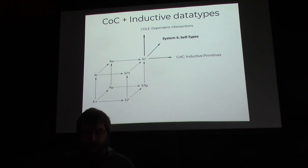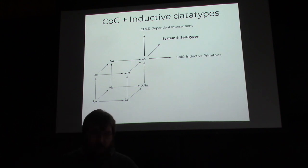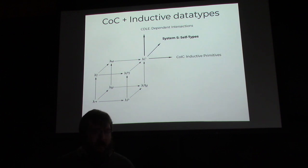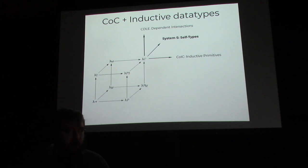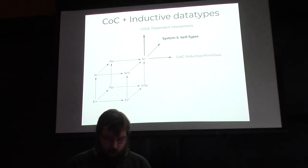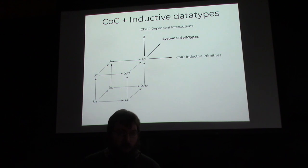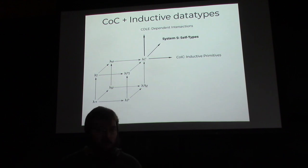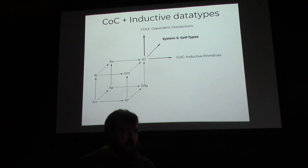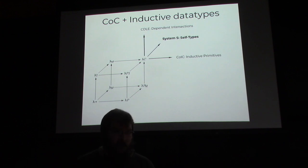The other two options we've looked at are CDLE and System S, both developed by one of our advisors Aaron Stump at the University of Iowa. These let you form inductive data types out of more primitive structures. CDLE uses dependent lambda eliminations. System S adds the self-type primitive and shows you can create data types and a consistent, sound, strongly normalizing system using self-types. To summarize: we're using self-types as an implementation technique for inductive structures, so we can get induction principles without adding them as primitives.